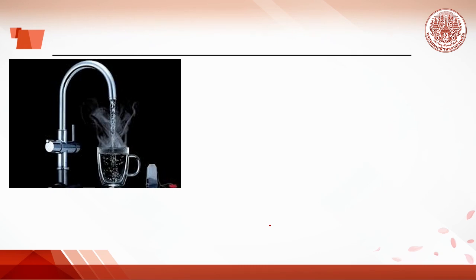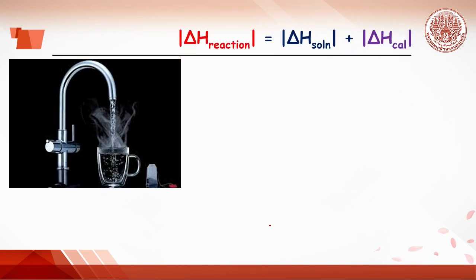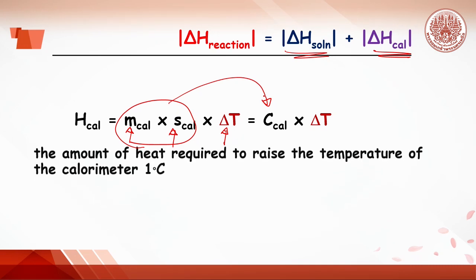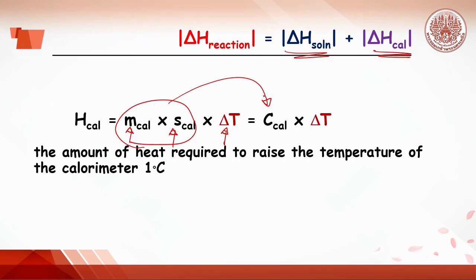Before going into detail, consider pouring hot water into a glass — heat from the hot water is also transferred to the glass. Therefore, the reaction transfers its heat to both the solution and the calorimeter. The calorimeter gains or loses heat depending on its mass, specific heat, and temperature change. These combined data are called heat capacity. The heat capacity of the calorimeter is the amount of heat required to raise the temperature of the calorimeter by 1 degree Celsius. Since each calorimeter has a different heat capacity, determination of the heat capacity must be estimated prior to use.